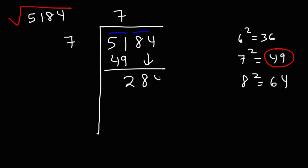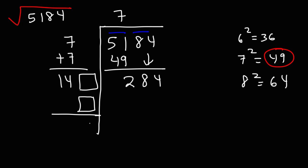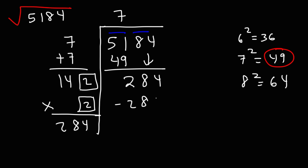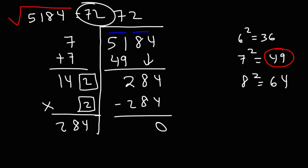We're going to bring down the 84. Now we're going to add the number we see here to itself: 7 plus 7 is 14. Let's put a box — 140-something times something equals 284. Well, 284 divided by 140-something is about 2. So 2 is the best number to go with. 142 times 2 is 284. So the square root of 5,184 is 72.